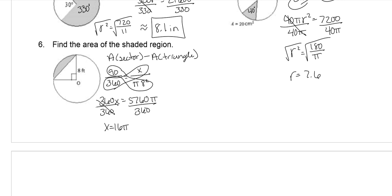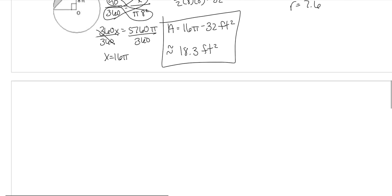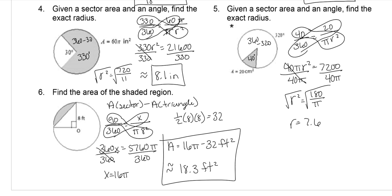And then the area of the triangle is half the base times the height, which my base and height are the same. So 4 times 8 is 32. So the area of my whole thing, my exact area would be 16π minus 32 feet squared. Now my approximated one would be different. So 16π minus 32 would be about 18.3. So whichever one it asks you for, that's the one that you give. And that's the end of our notes.